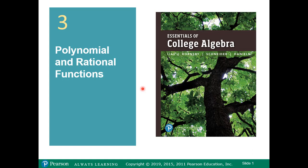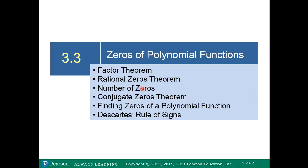Okay class, today we are going to continue with Chapter 3, and we're going to start Section 3 today. We're going to talk about these theorems: the Factor Theorem, the Rational Zeros Theorem, Number of Zeros, Conjugate Zeros Theorem, Finding Zeros of a Polynomial Function, and then we're going to talk about Descartes' Rule of Signs.